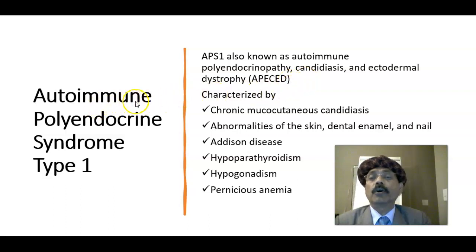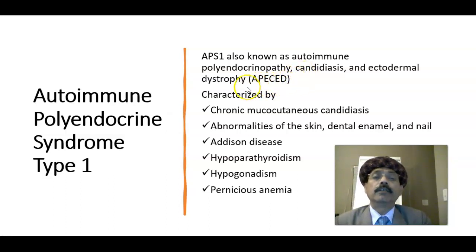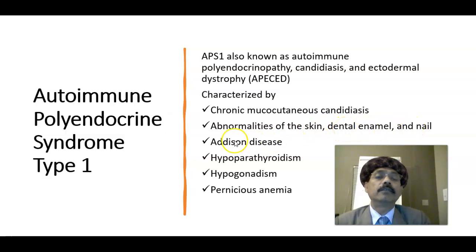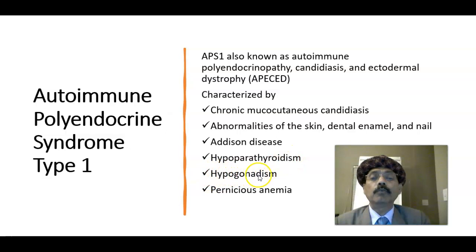What are the characteristics of this disease? This is a very rare disease and it is manifested by chronic mucocutaneous candidiasis, abnormalities of the skin, dental enamel and nail, Addison's disease that is primary adrenocortical insufficiency, hypoparathyroidism, hypogonadism — specially of the testis or the ovary — and pernicious anemia, usually due to malfunction of the parietal cell of the stomach.